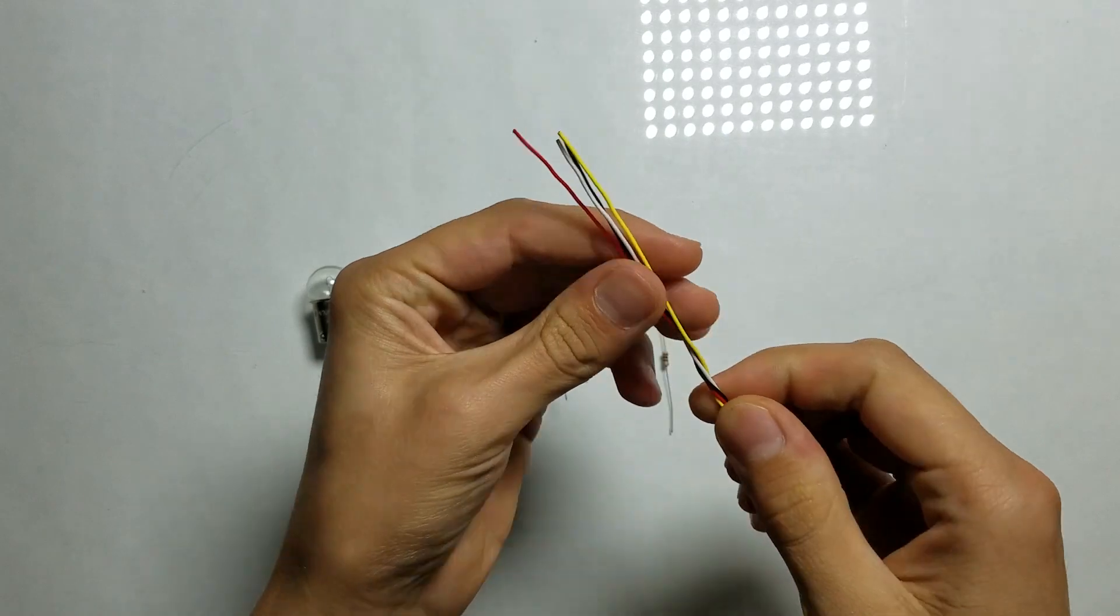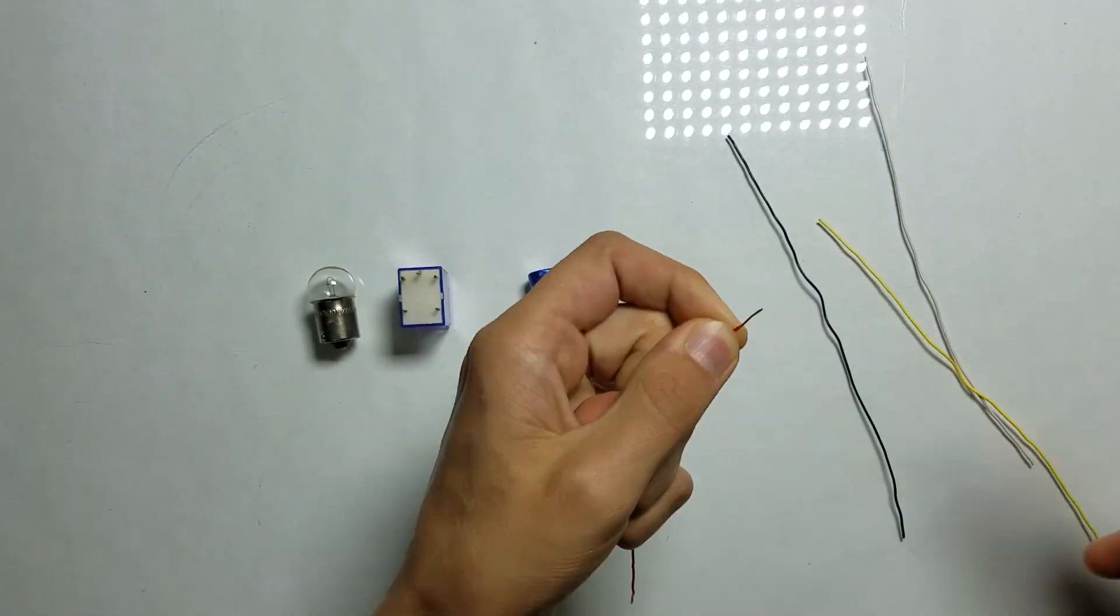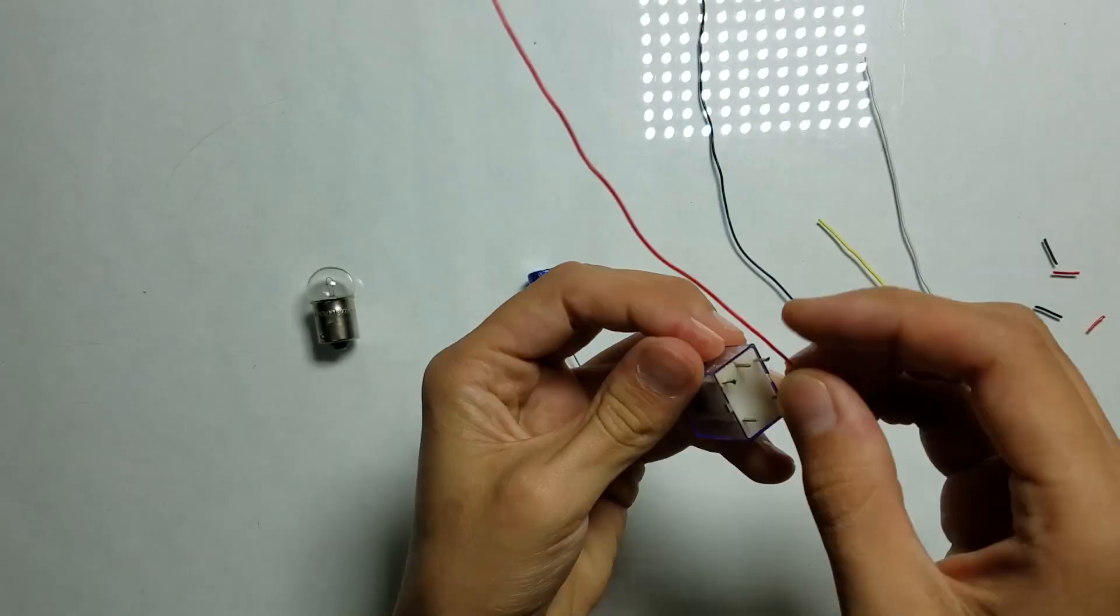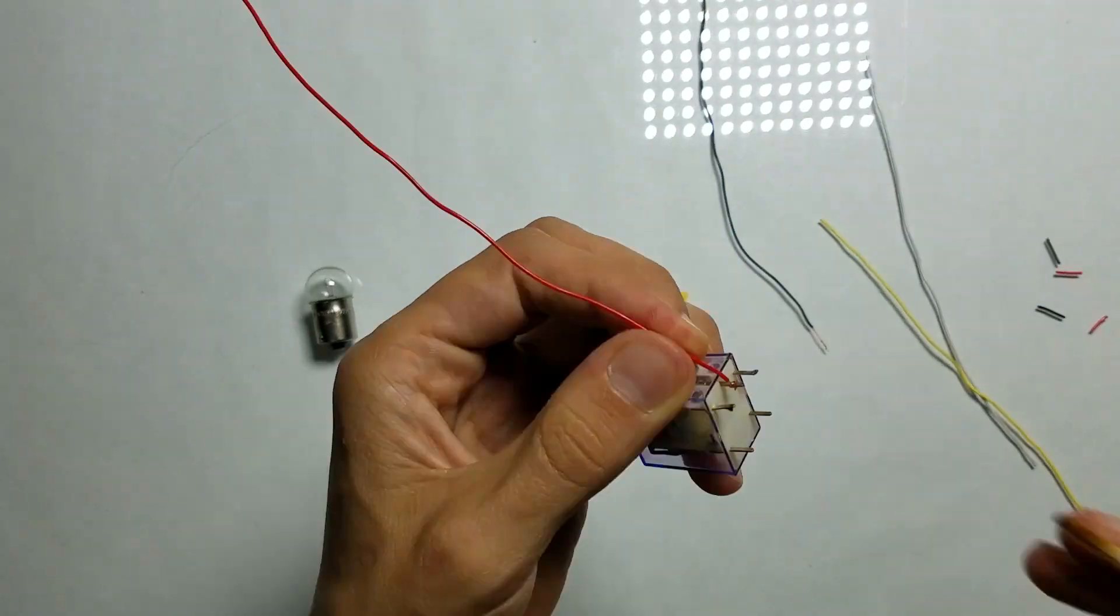First let's strip black and red wires. I'm going to use these wires to power the device. Let's solder the red wire to the common pin of the relay.